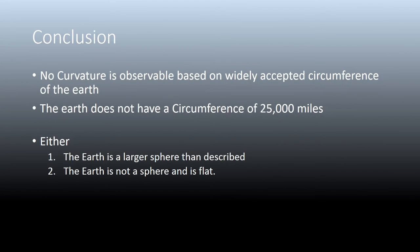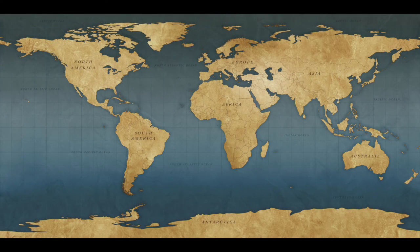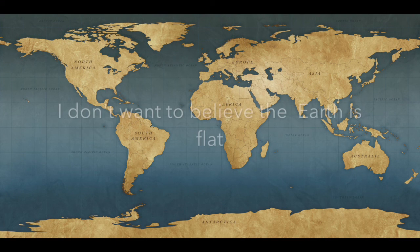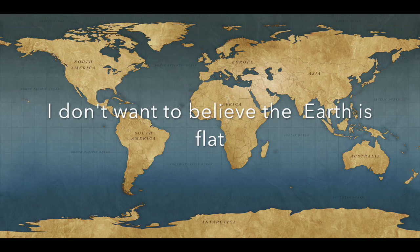In conclusion, no curvature is observable based on the widely accepted circumference of the Earth being 25,000 miles. Either the Earth is a larger sphere than described, or the Earth is not a sphere and is flat. I can only go by what my eyes tell me and what can be demonstrated — scientifically, a little bit of math, a little bit of geometry — what I observe is flatness. I'm open to correction, and I don't want to believe that the Earth is flat.